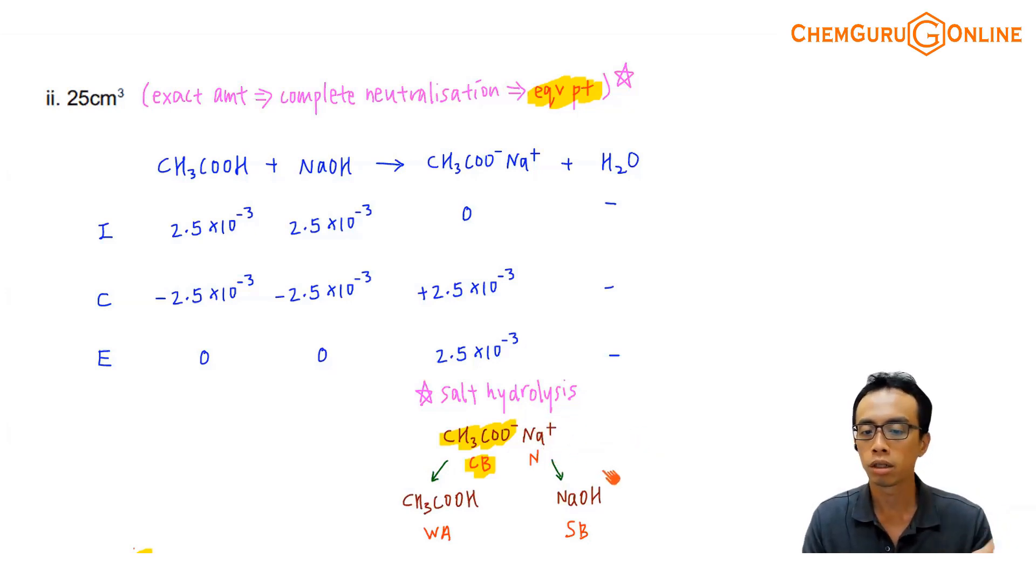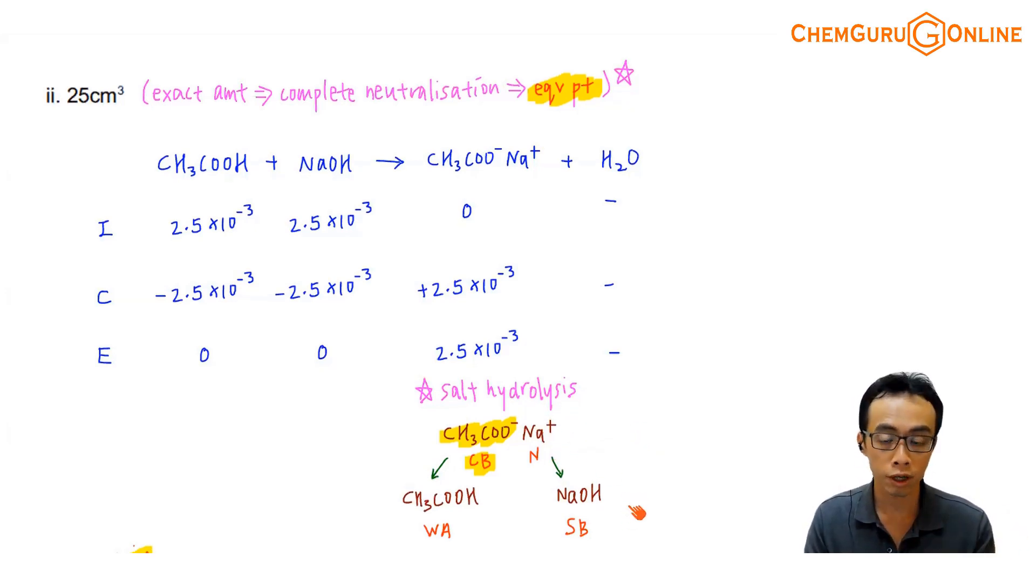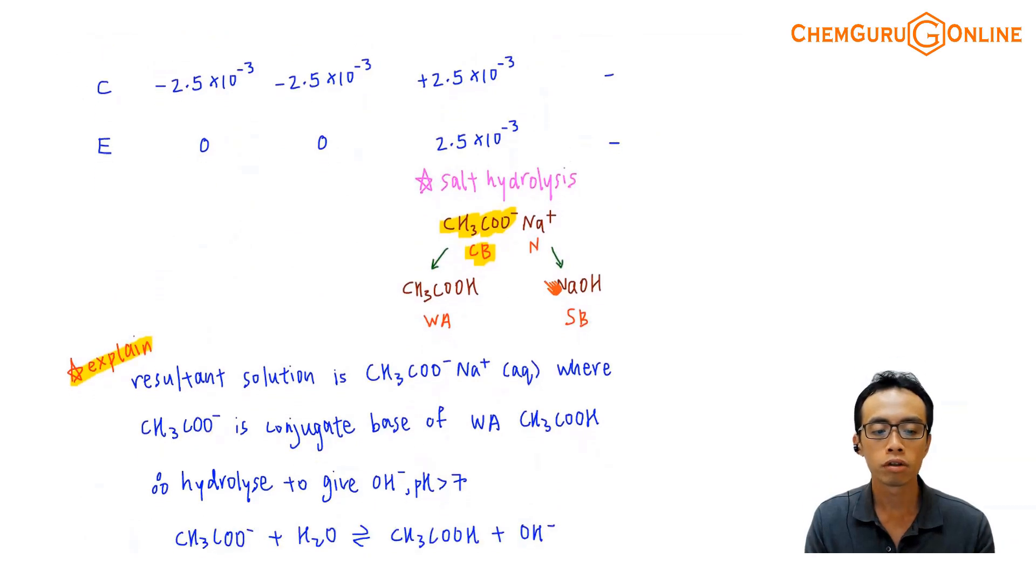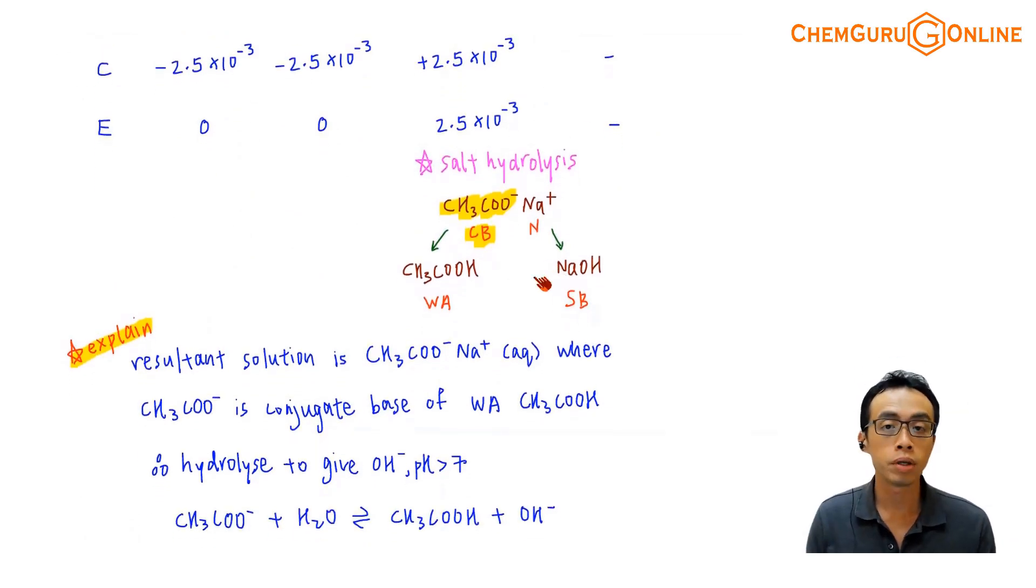And this salt, we know that Na⁺ is neutral because it comes from sodium hydroxide. I know that CH₃COO⁻ is a conjugate base because it comes from a weak acid. Weak acid will give me weak conjugate base. So this salt is nothing more than the conjugate base. If it is a conjugate base, obviously you give me OH⁻ in solution, and the solution will be alkaline.